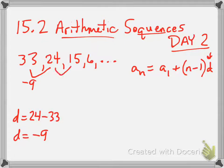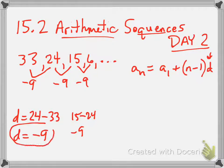If I do the same thing here, 15 minus 24, negative 9. 6 minus 15, negative 9. So D is negative 9.